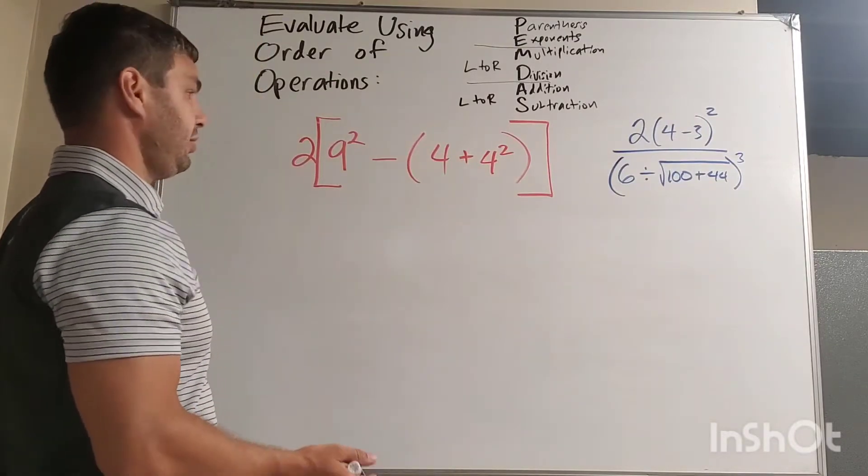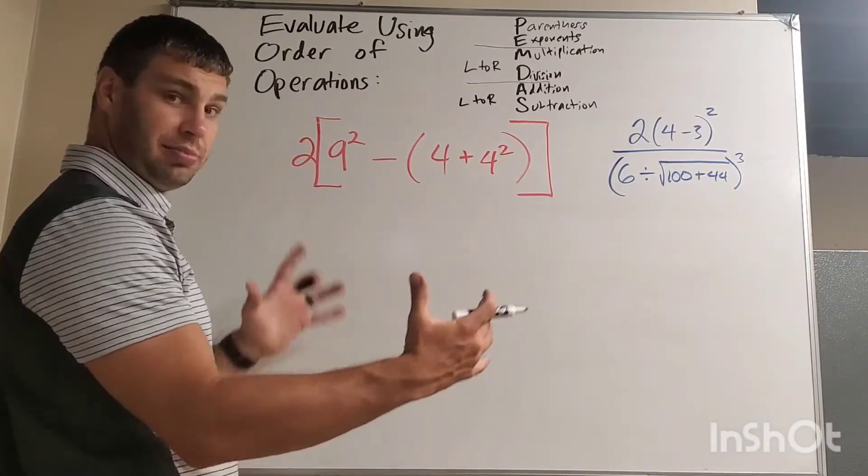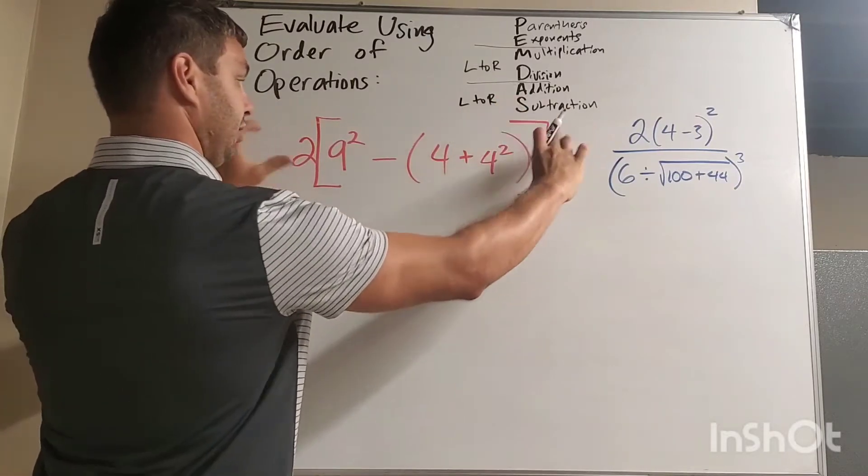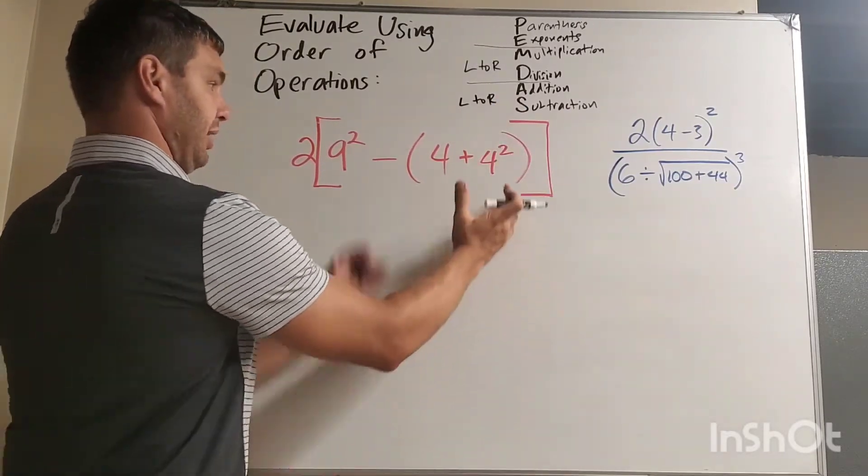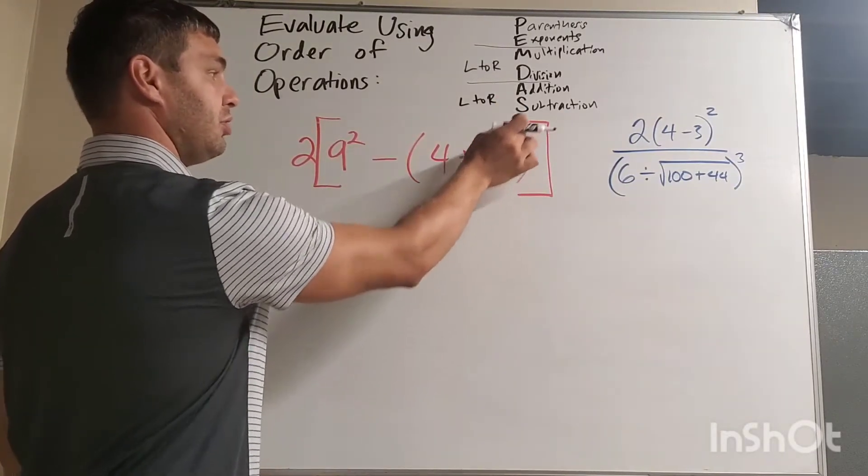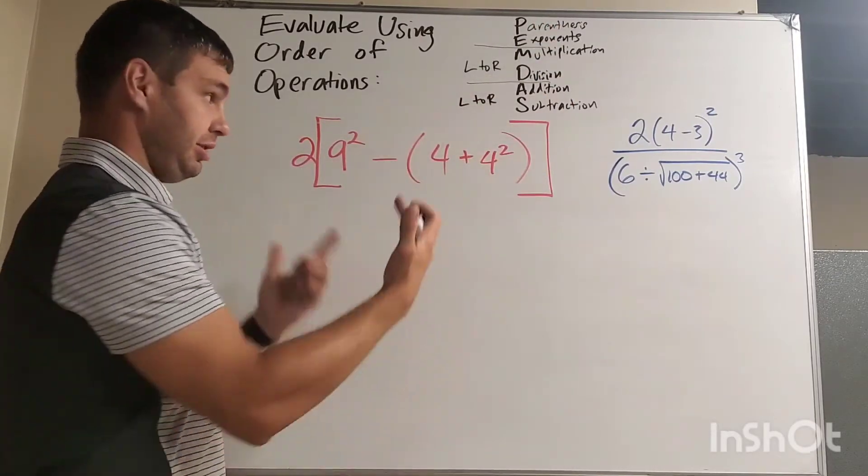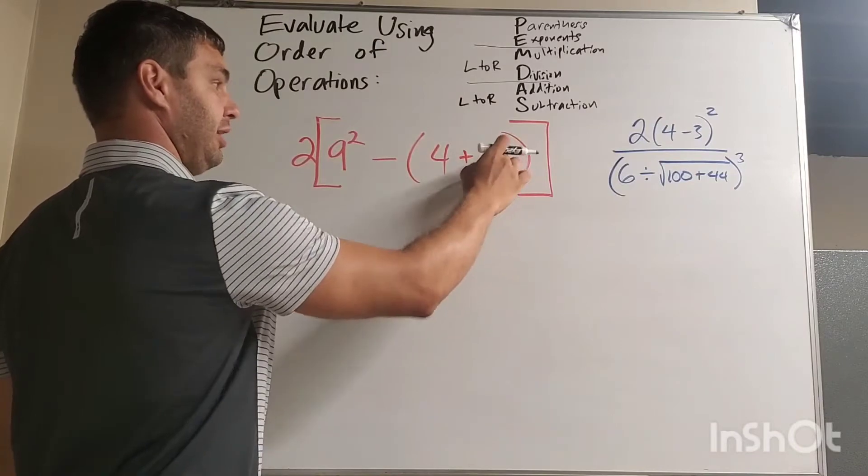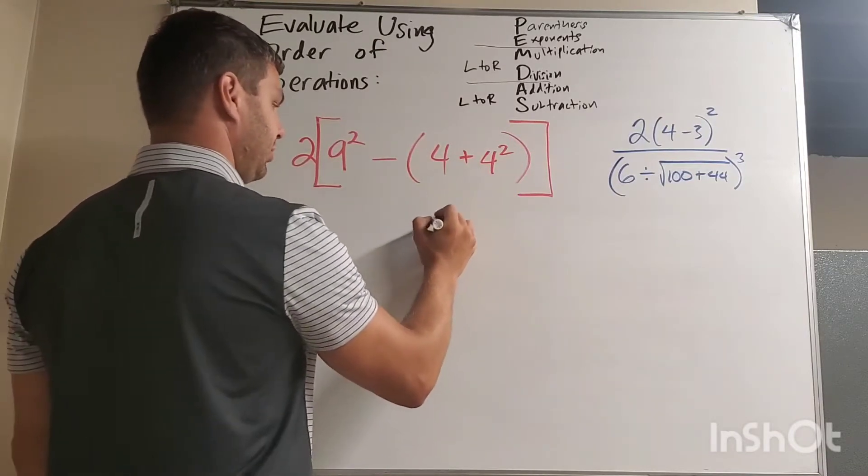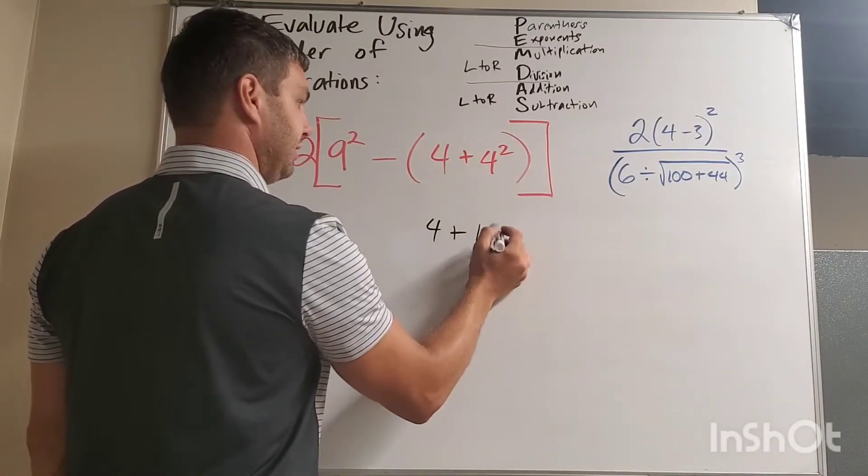Okay, so let's try this red one first. I have to do what's in my innermost set of parentheses. Remember, brackets also count as parentheses. So my innermost, we have 4 plus 4 squared. And inside that, my first thing I have to do using the order of operations is the exponents. 4 squared is 16. Okay, so I'm going to bring this down, 4 plus 16 now.